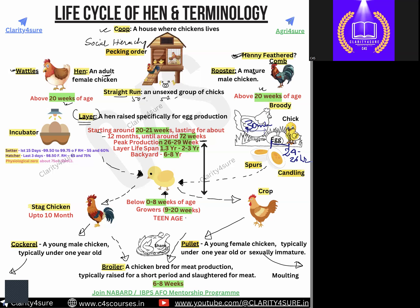The lifespan of layer birds — birds which lay eggs — is 1.3 to 2–3 years for commercial birds. Backyard poultry, found in villages, has a lifespan of 6 to 8 years. So commercial layer birds have a very short lifespan compared to backyard poultry. If birds are used for meat purposes, they have a lifespan of only 6 to 8 weeks — those are called broilers.